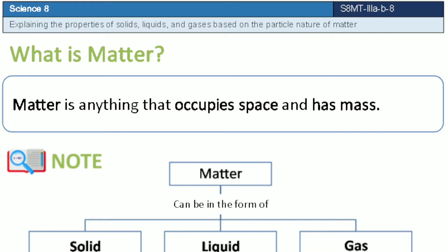Matter is anything that occupies space and has mass. Note that matter can be in the form of solid, liquid, or gas. These forms are often referred to as phases of matter.